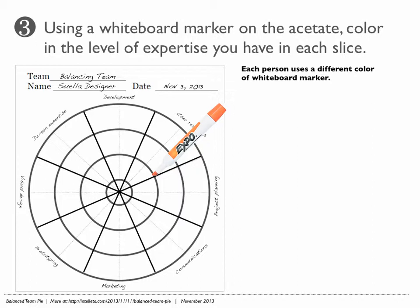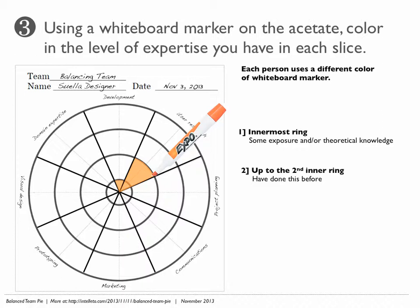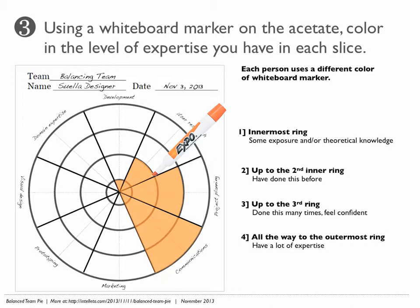If you have some exposure or theoretical knowledge, color up to the first ring. If you've done the activity before, color up to the second ring. If you've done it many times and you're pretty skilled, color up to the third ring. And if you have a lot of expertise, or you could even teach this category, color all the way out to the outermost ring. If there's a slice of the pie where you don't have any exposure or knowledge, go ahead and leave it blank.